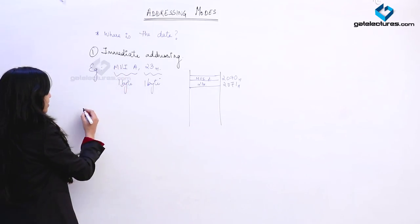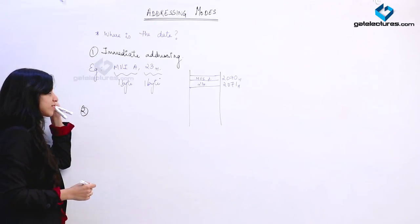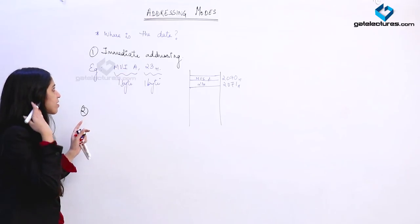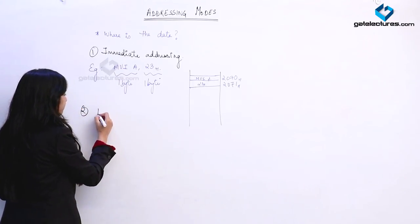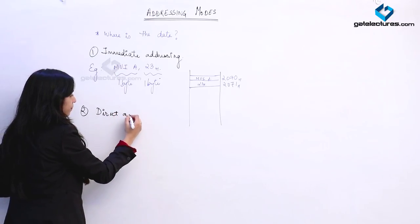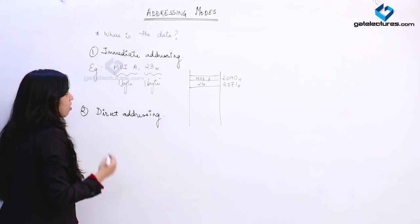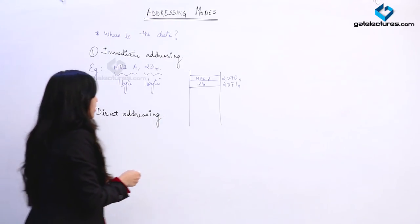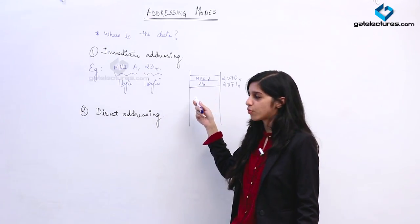The next addressing mode — there are a number of instructions in each addressing mode and we are going to look at them separately. Right now we are just discussing the different types of addressing mode. The next addressing mode is going to be direct addressing. In direct addressing, the data was not located in the immediate next memory location.